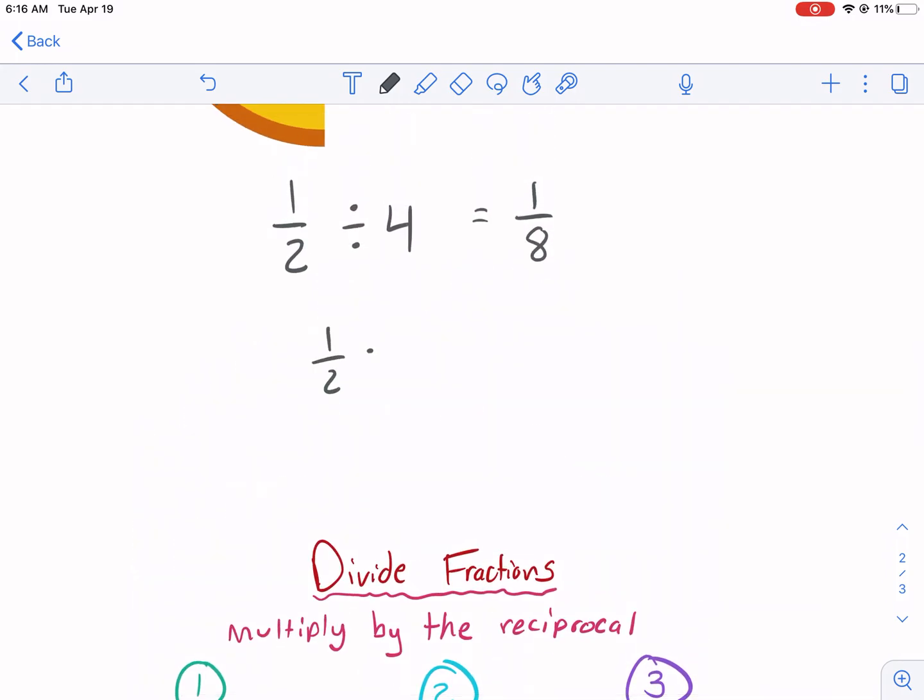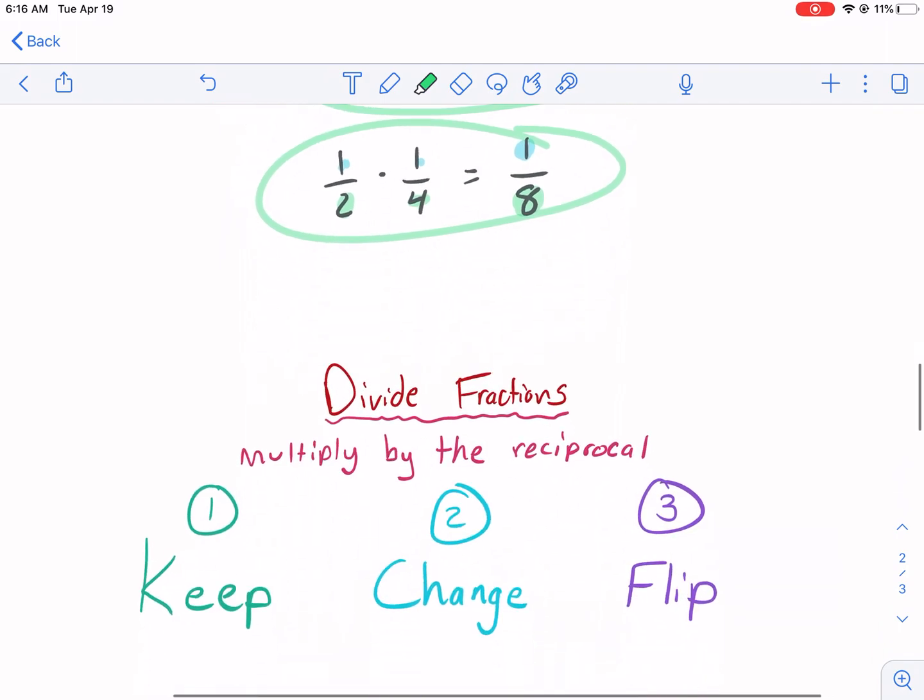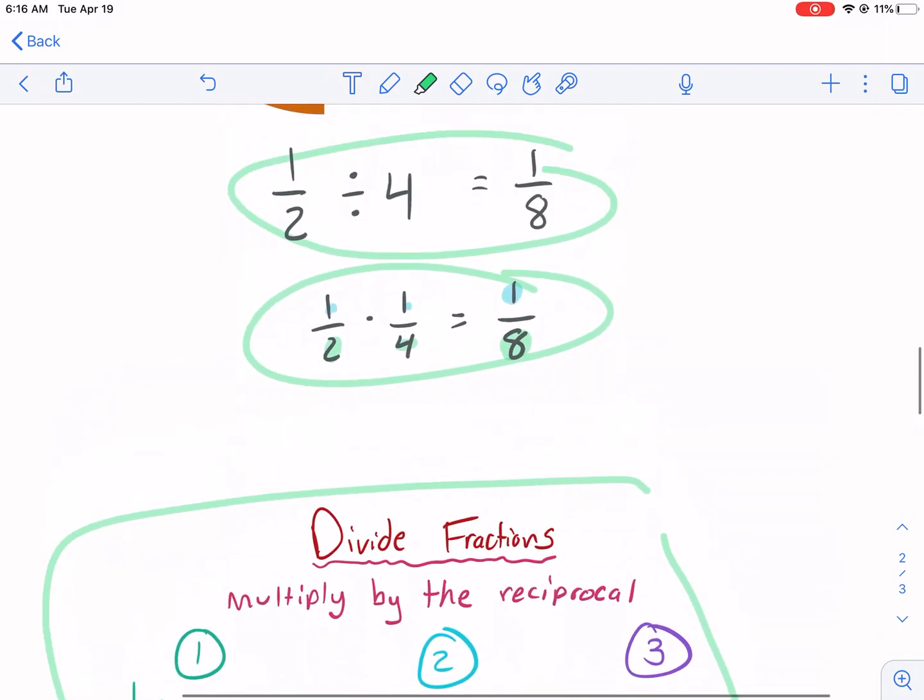Well, 1/2 × 1/4 = 1/8. Why? Because we do the top times the top and we get one. And then we do the bottom times the bottom, 2 × 4, and we get eight. So it works out that these two things are equivalent, but this is the process we are going to use.